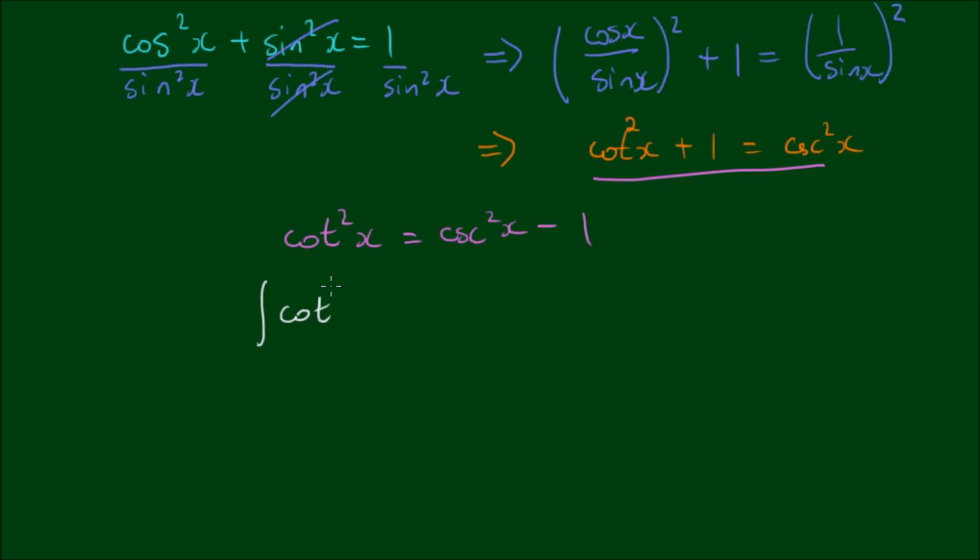so the integral of the cotangent squared of x is equal to the integral of the cosecant squared of x minus 1 with respect to x.